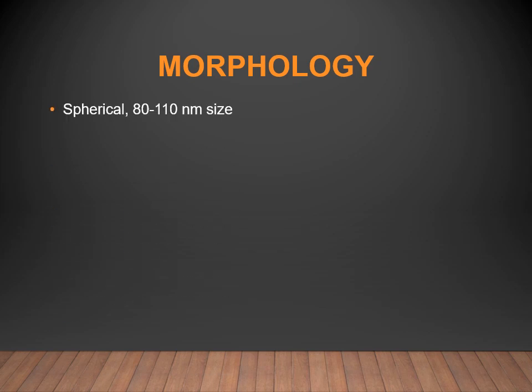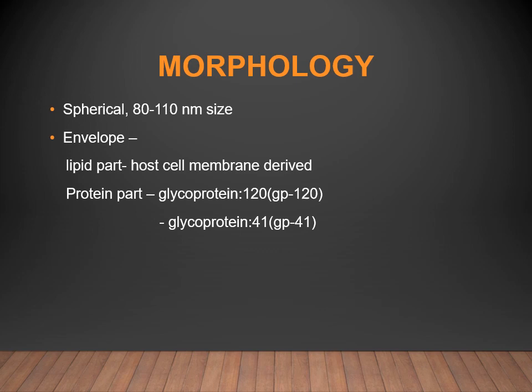Regarding the morphology of HIV: this virus is spherical in shape and approximately 80 to 110 nanometers in size. The virus has an envelope and a nucleocapsid. The envelope has two parts — the lipid part, which is derived from the host cell membrane, and the protein part, which includes glycoprotein 120 and glycoprotein 41.